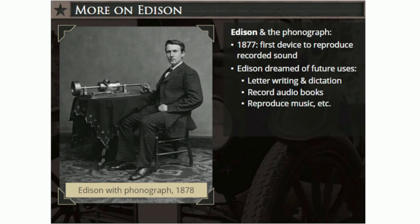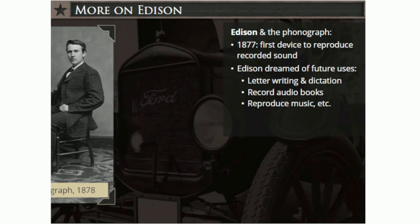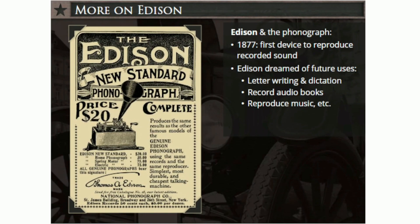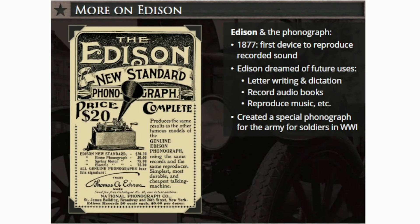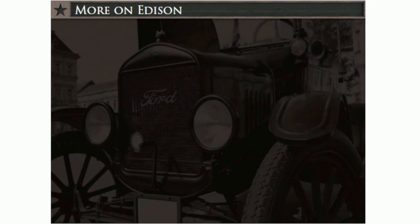After creating the phonograph, Edison moved on to his work in electricity. However, ten years later, he returned to focus on making improvements to the phonograph to create a commercial product for business and home use. Edison even created a special model of the phonograph for the U.S. Army. Army units purchased the phonographs to be used by American soldiers serving overseas during World War I. Edison's work also led to the beginnings of the commercial record industry, and Edison Records became one of the earliest record labels that pioneered sound recording and reproduction.